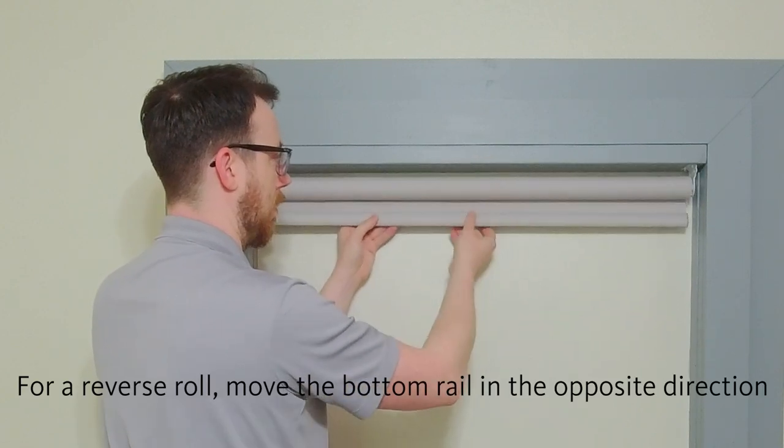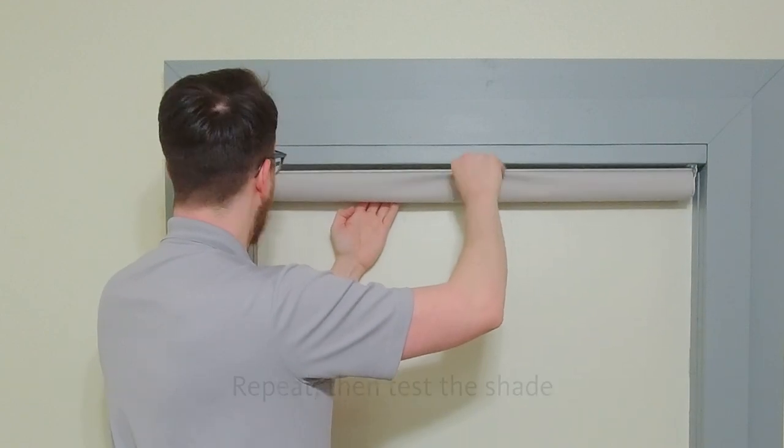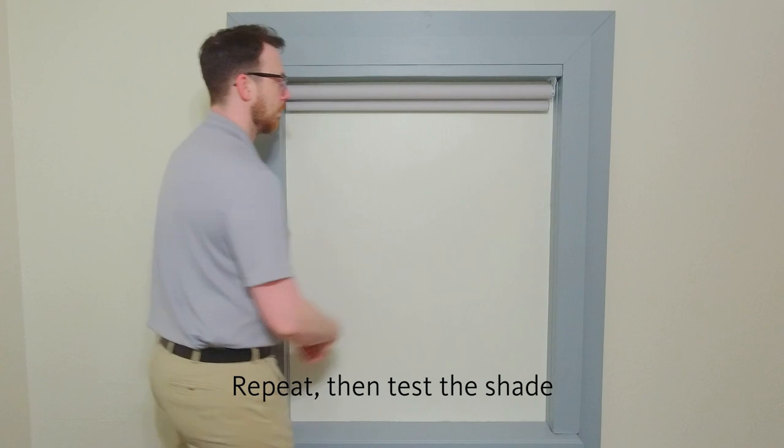If the shade is a reverse roll, move the bottom rail in the opposite direction. Do this two times, then test the shade.